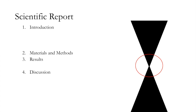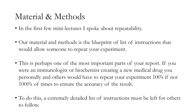Now that we've reached the bottom of the first half of the hourglass, we're moving into the materials and methods section — and that's really narrow; we can't talk about anything other than our methods. In the first few mini lectures I spoke about repeatability, and that is still the case. Our materials and methods is like a blueprint — a list of instructions that would allow anybody in the world to repeat your experiment.